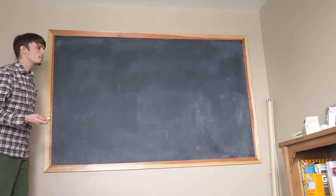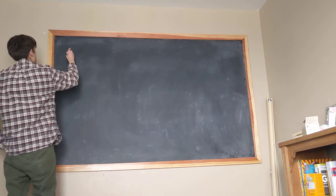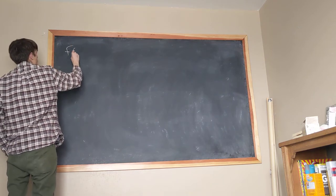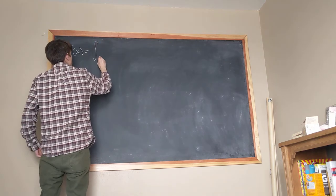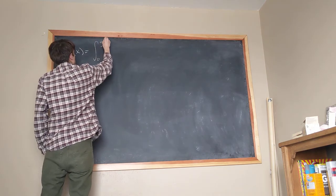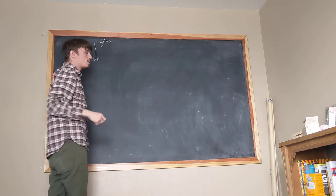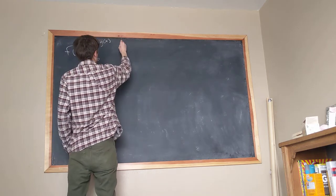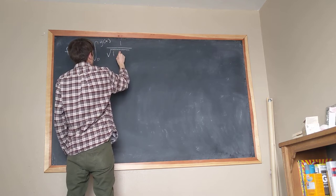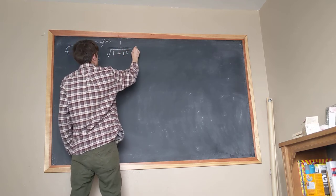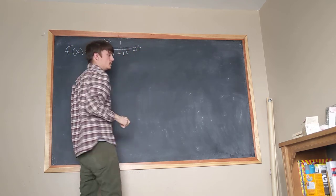Okay, so today we're going to do a little problem that starts like this. We're given that f of x is equal to the integral from 0 to g of x of 1 over the square root of 1 plus t cubed dt.